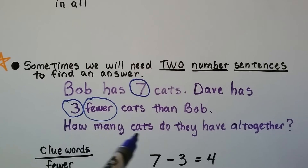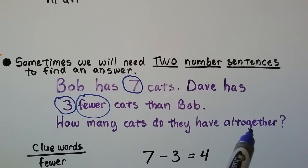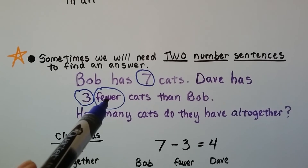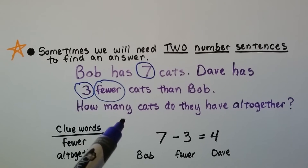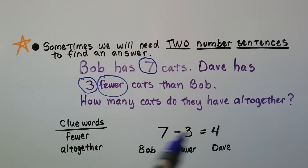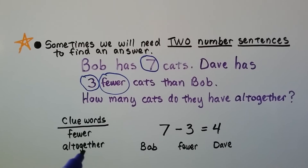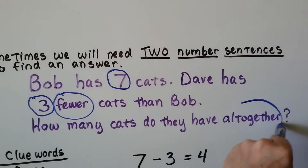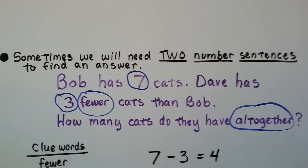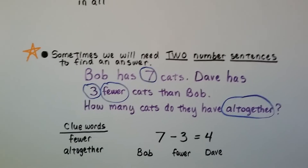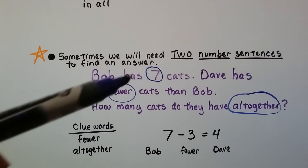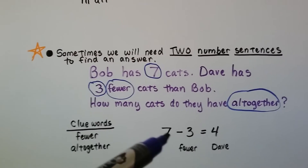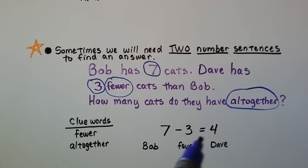But then it says how many cats do they have all together. Our clue words are 'fewer' — we're going to need a subtraction sentence. Then after we do our subtraction sentence, it says 'all together,' so we're going to have to do an addition sentence. We're going to need two number sentences to solve this one. Seven minus three equals four.